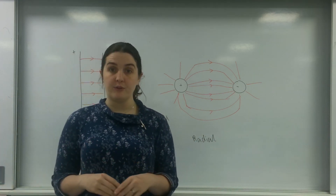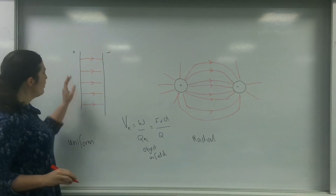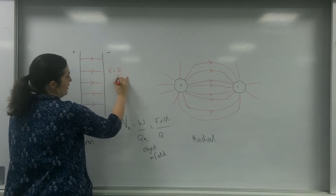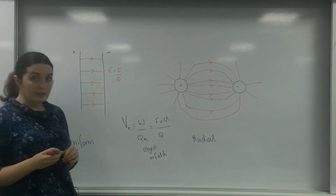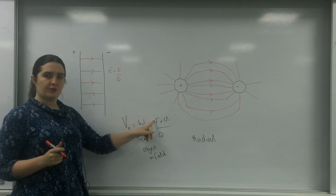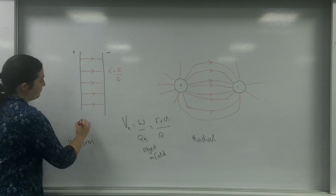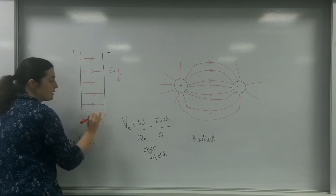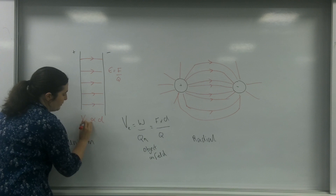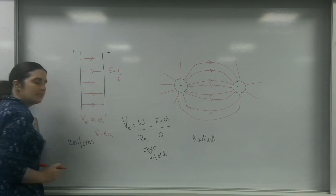In a uniform field, the field strength is constant, which means the force is constant. Because this force is constant and Q is constant, potential is proportional to distance. We've seen this before: potential equals field strength times D.